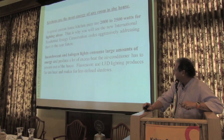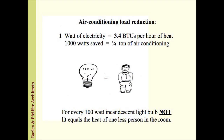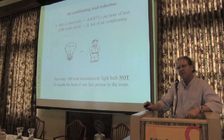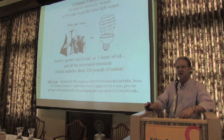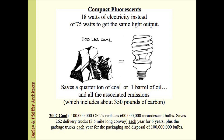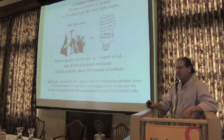Those lights use a lot of energy and they also produce a lot of heat. For every 100-watt light bulb it's like having another person in the kitchen — or putting it another way, for every watt of energy you consume it's producing about 3.5 BTUs of heat. If you could light your kitchen using less lighting, you'd produce a lot less heat for your air conditioner. For every normal light bulb you change out with a fluorescent of the same output, you save a quarter of a ton of coal being burned at the local power plant every year.